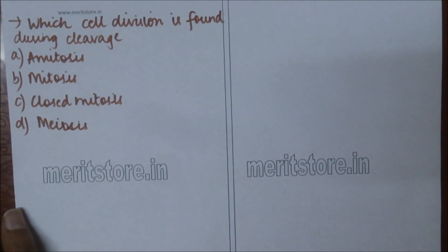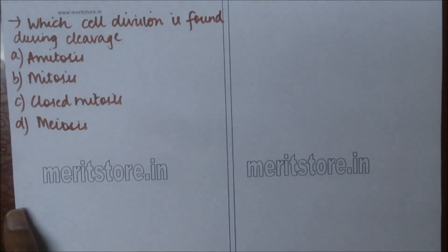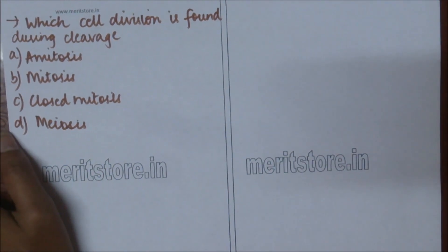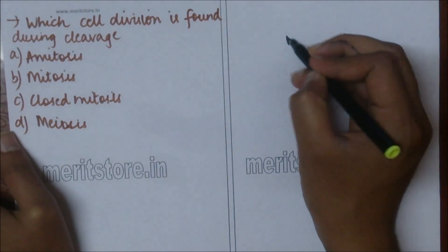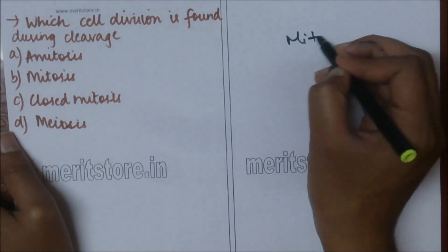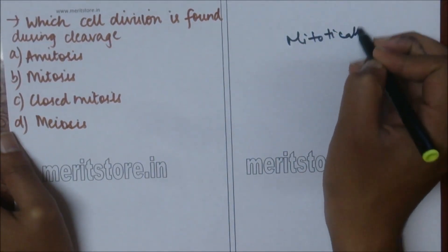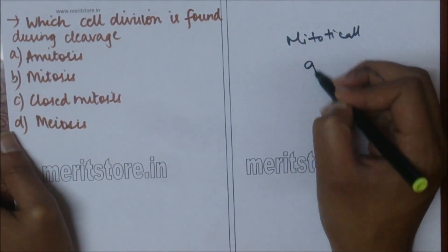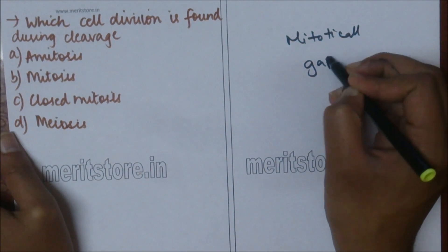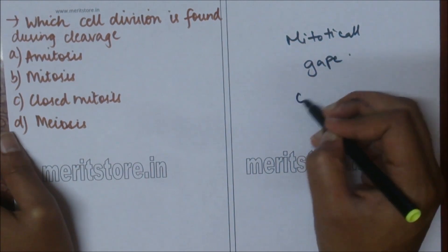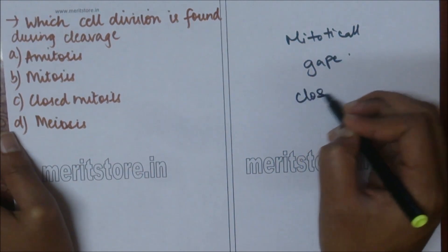Which cell division is found during cleavage? A) mitosis, B) closed mitosis, C) meiosis. During cleavage, cells divide mitotically without any gap, and this is known as closed mitosis. So option C is the correct answer.